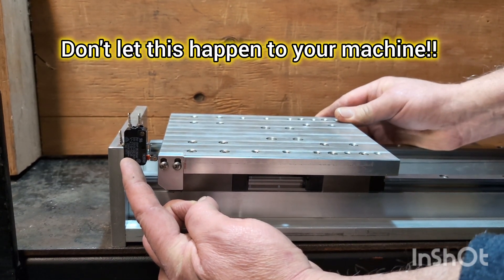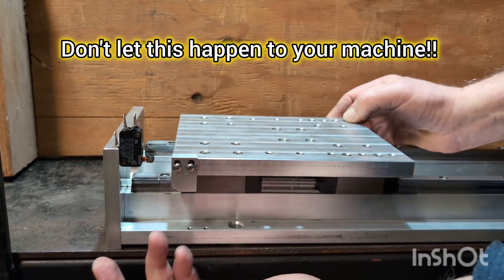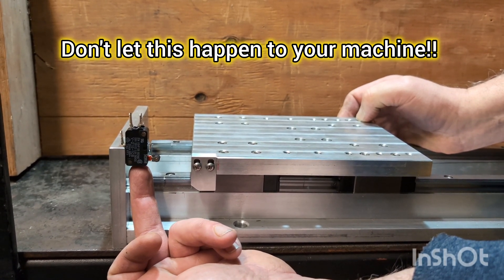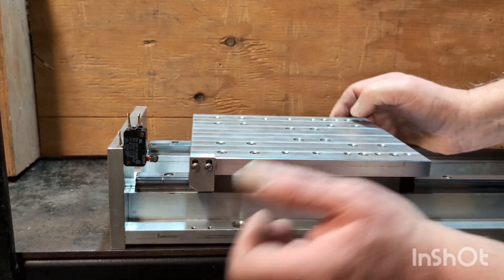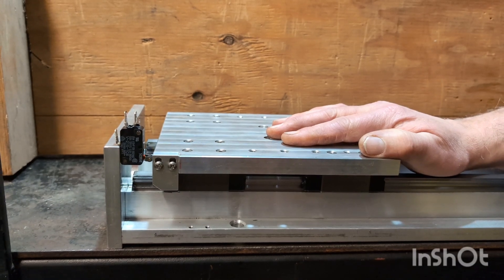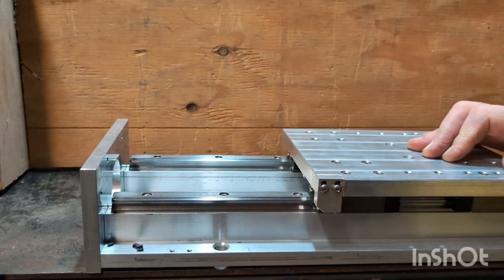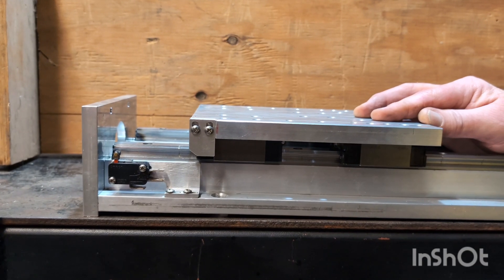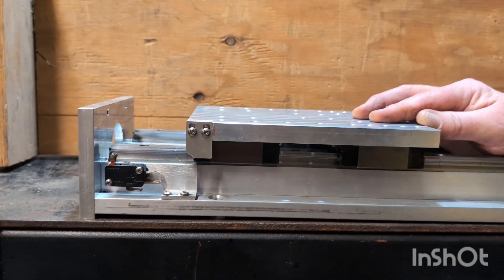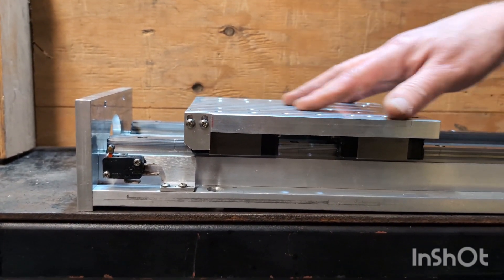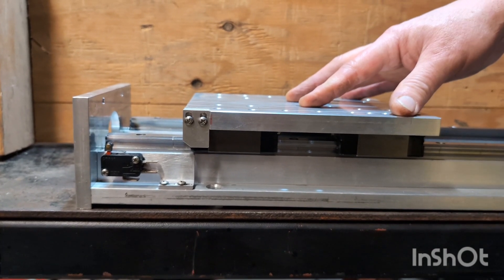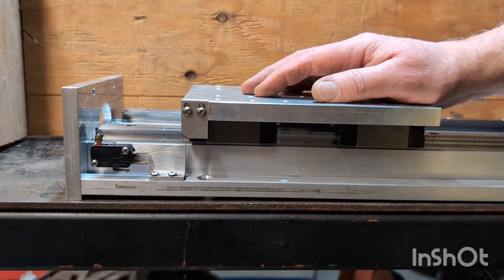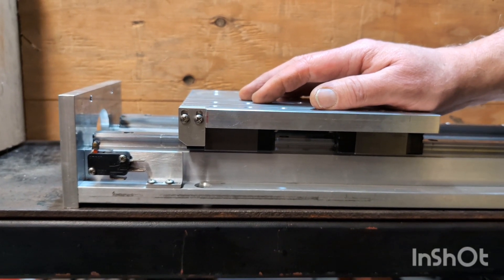I have seen some people mount their limit switch like this, and this is why it's not good. Hey guys, it's Russ from Pre-Six Parts Warehouse. I have a 12-inch gantry here for a Pre-Six machine. This is a customer's upgraded assembly, and I wanted to go into some details about limit switches.